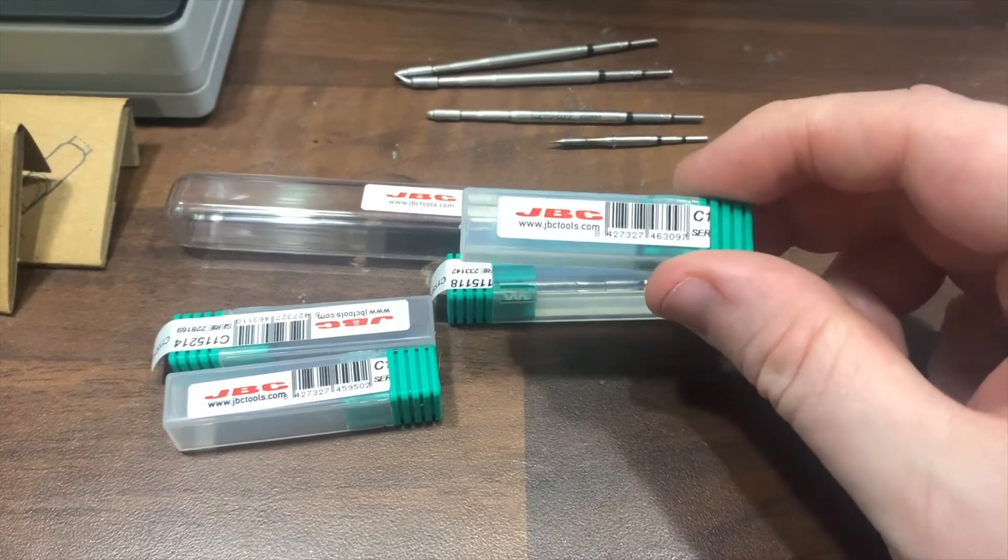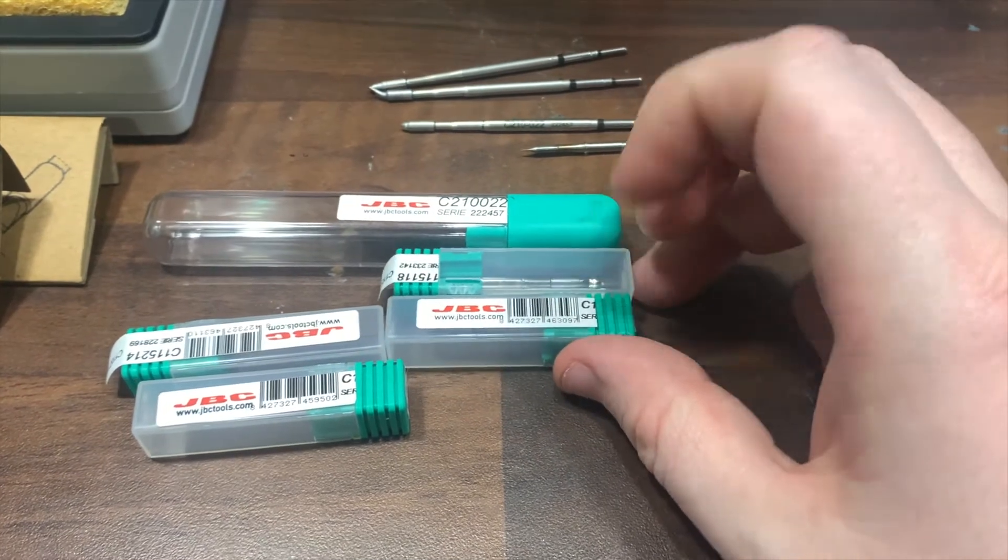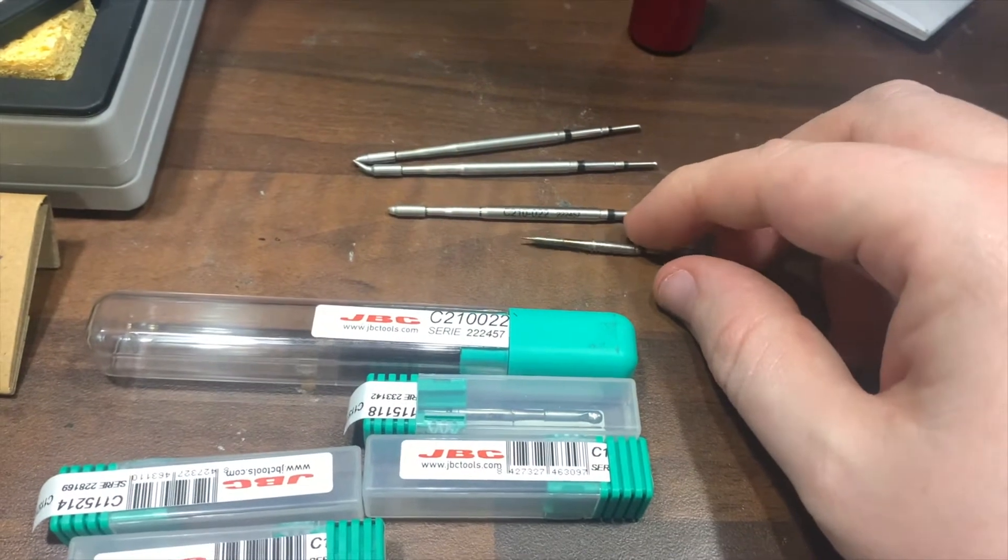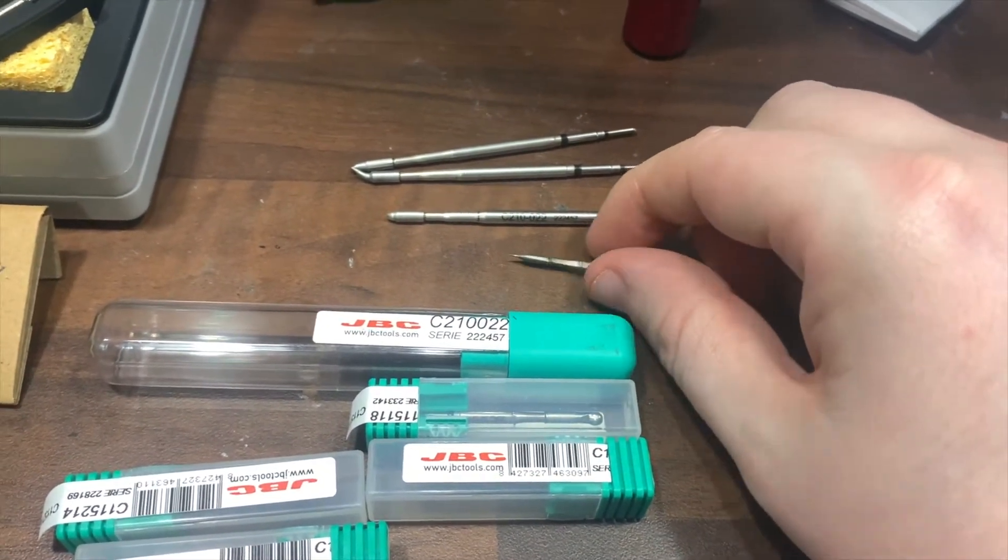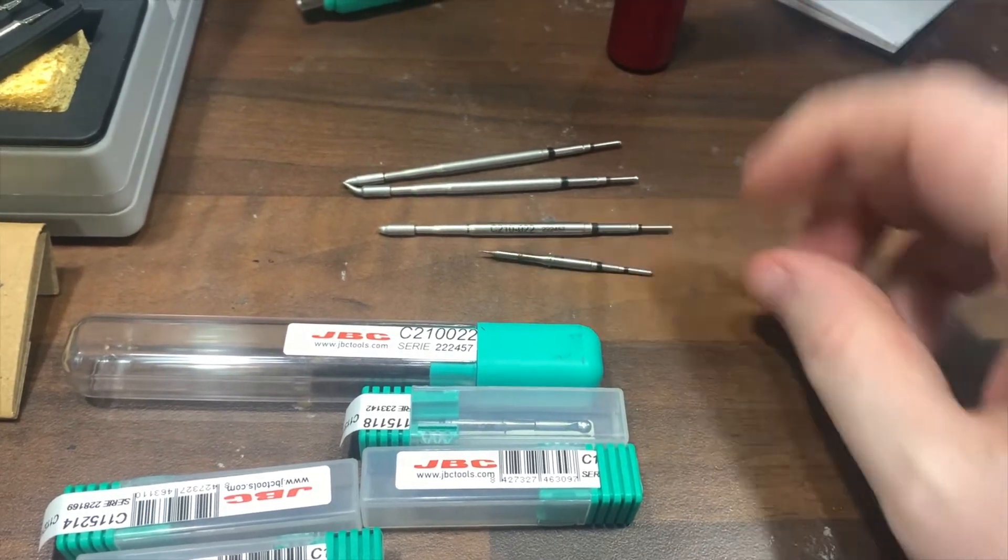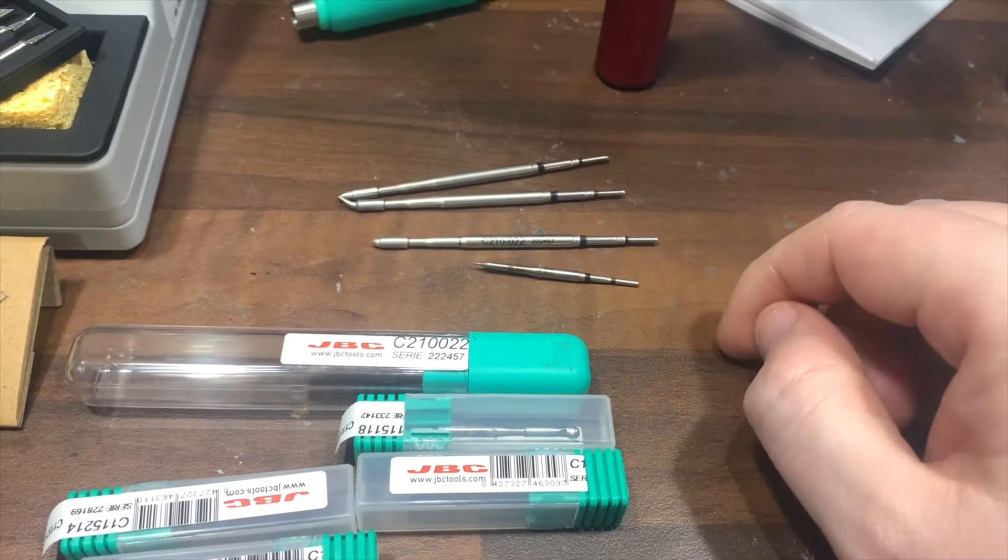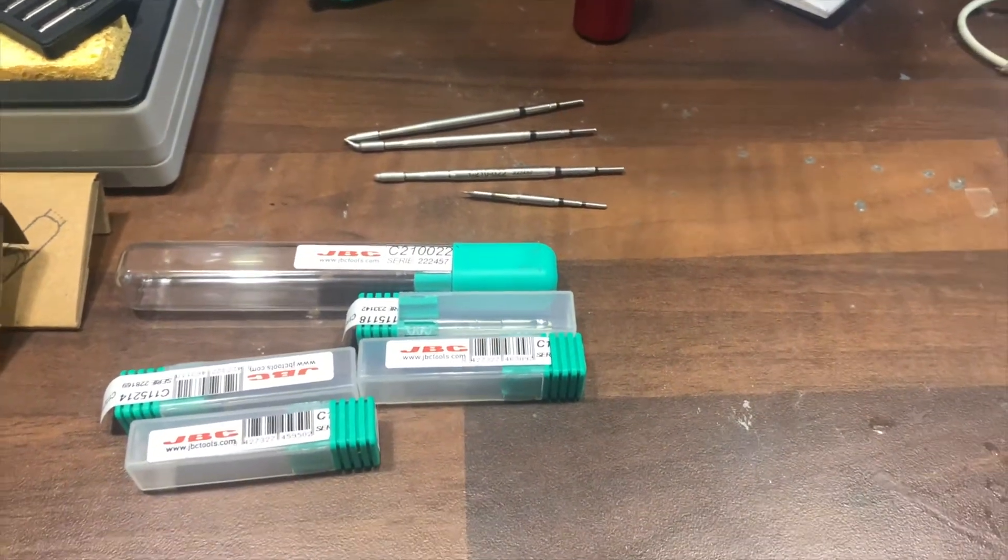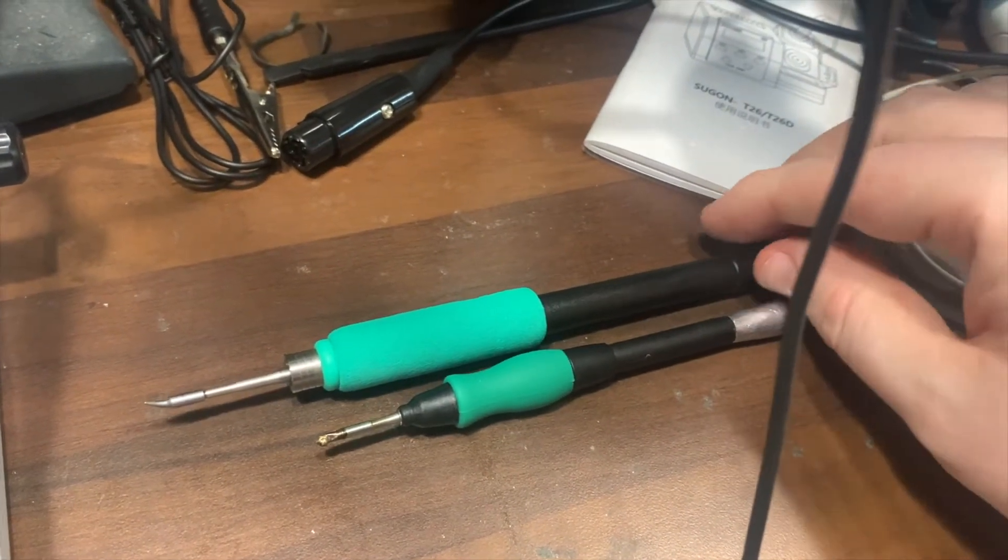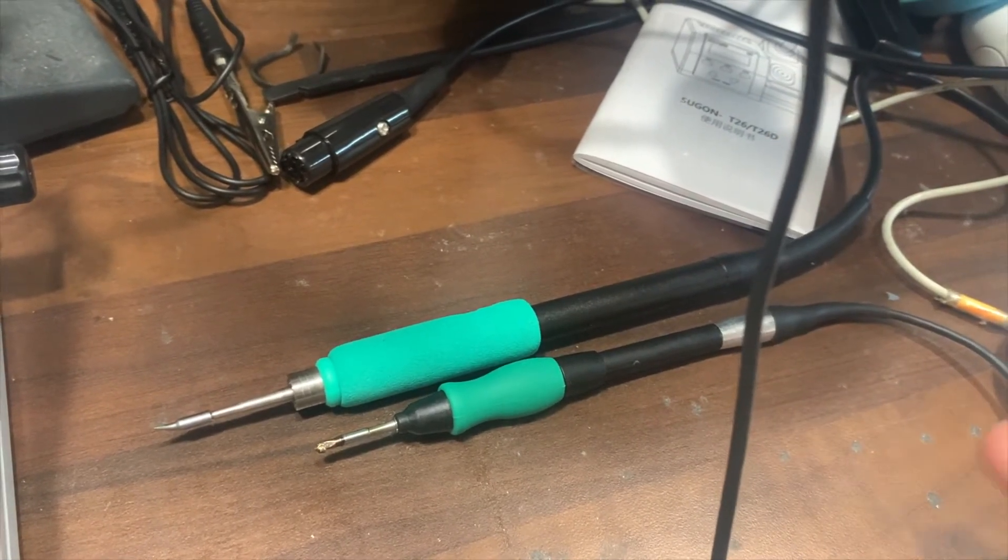In one of my previous videos I did a video on the Sugon T36 station and that uses JBC C115 tips. They're basically the JBC nano tips and I put them side by side with the T26 tips. As you can see there's a considerable difference between the two. They're a lot longer the T26 and there's a considerable difference between the sizes of the handles as well. This is the difference between the Sugon T36 and the Sugon T26 station.